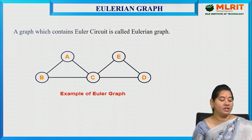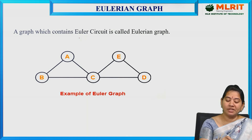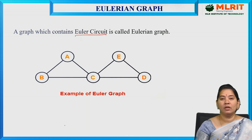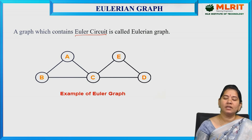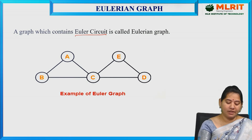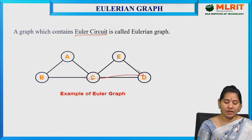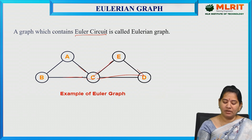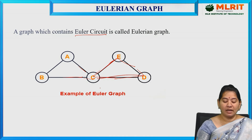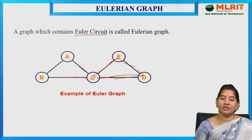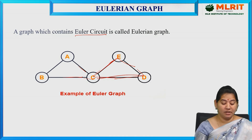A graph which contains an Euler circuit is called an Eulerian graph. For example, in graph with vertices A, B, C, D, E connected as A-B, B-C, C-E, E-D, D-A: A has degree 2, B has degree 2, C has degree 2, E has degree 2, D has degree 2 — all even degrees, so this is called an Eulerian graph.